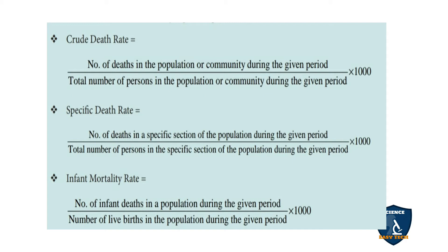Next is specific death rate — death which occurs due to a specific health condition. For example, how many deaths occurred because of the COVID-19 pandemic — that is related to a specific condition. Specific death rate equals the number of deaths in a specific section of the population during the given period, divided by the total number of persons in that specific section of the population during the given period, multiplied by 1000.